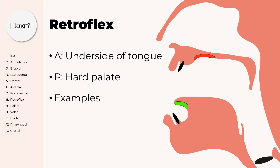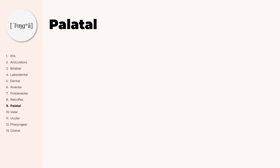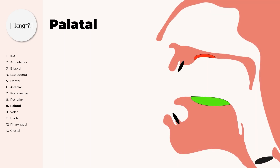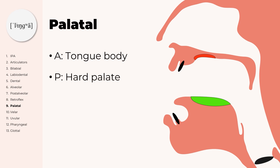Examples for retroflex consonants include retroflex stops and fricatives. Now come the palatal sounds. The palatal sounds are produced with the tongue body also against the hard palate, like retroflex consonants. Palatal sounds are for example N, T, S, or J.